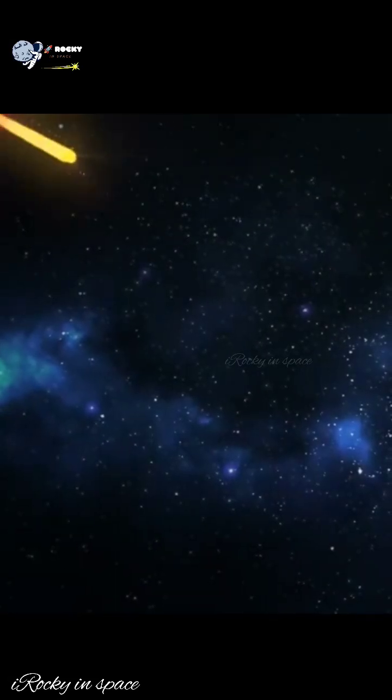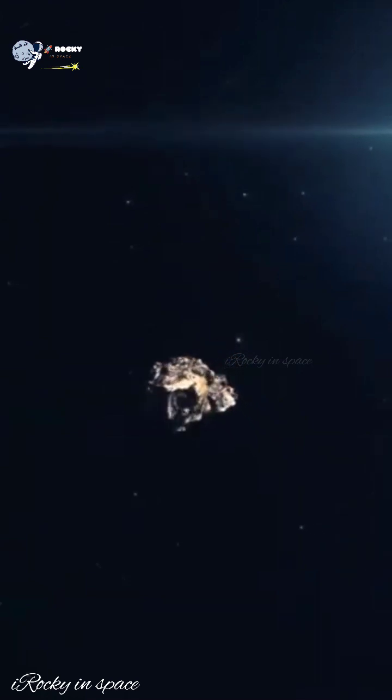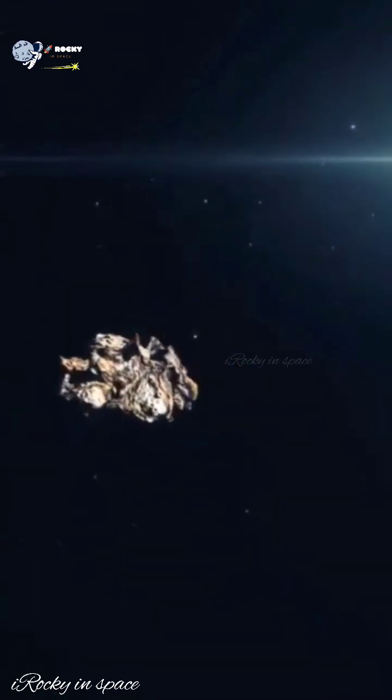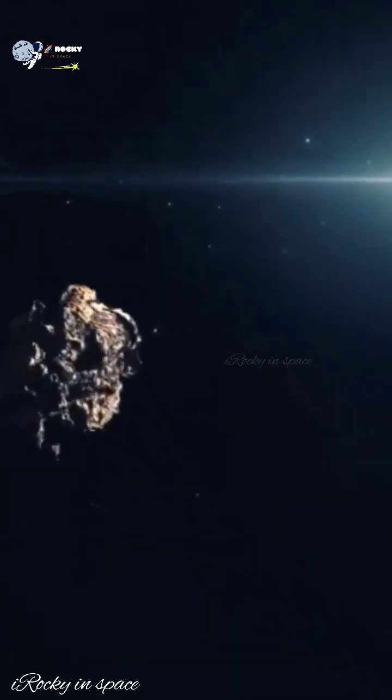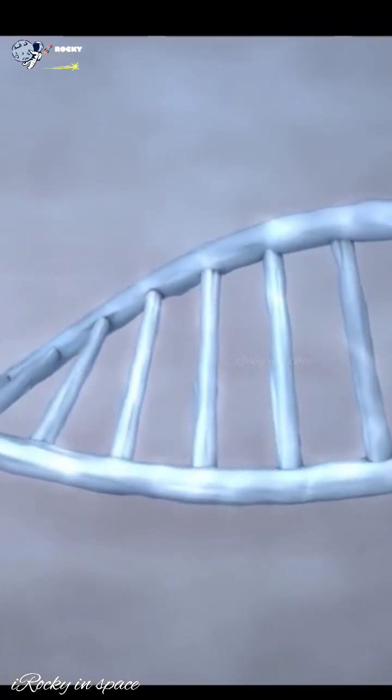NASA scientists find evidence that life on Earth may have come from an asteroid. NASA scientists along with researchers from Japan have found a crucial link between life on Earth and asteroids while studying the five components of DNA and RNA.